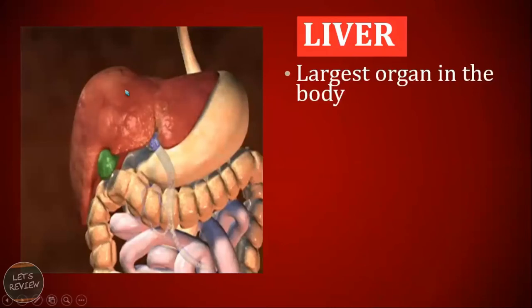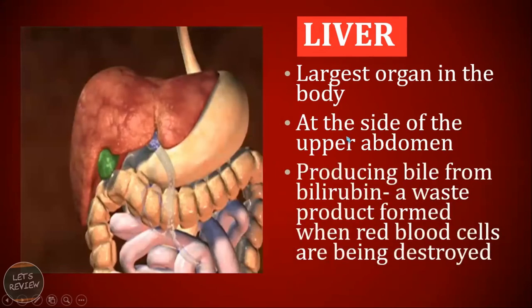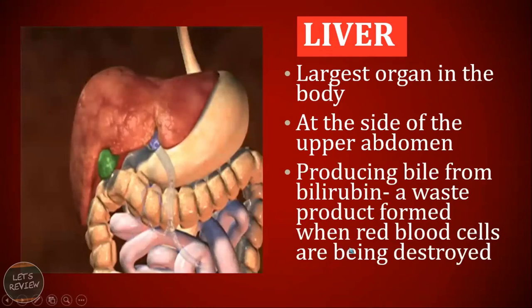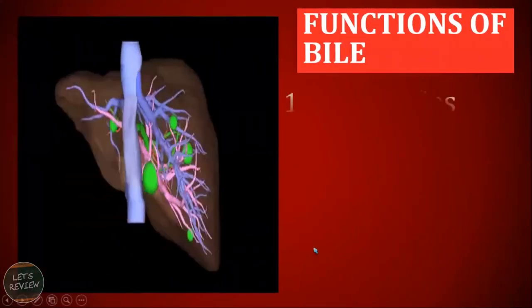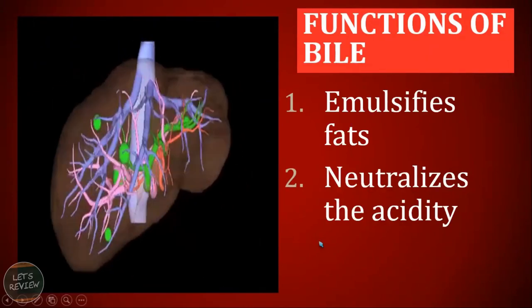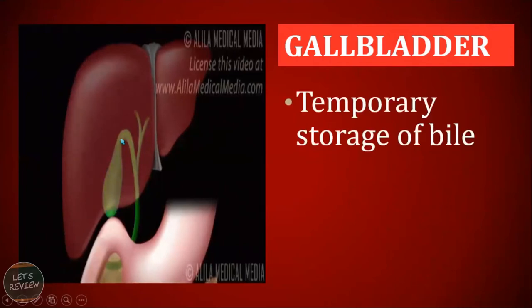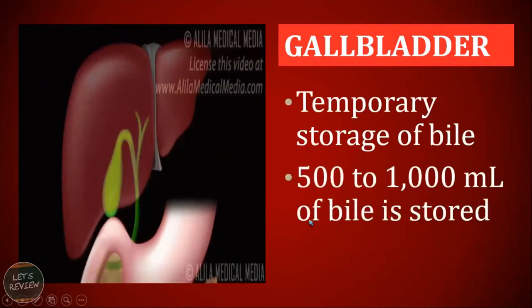The liver is another accessory organ. It is considered to be the largest organ in the body and can be found at the upper abdomen. It produces bile from bilirubin, a waste product from when blood cells are destroyed — so it recycles that into bile. The function of the bile produced by the liver is to emulsify fat and neutralize the acidity of the stomach. Connected to it is a small pouch called the gallbladder, which is the temporary storage of bile — about 500 to 1,000 ml of bile can be stored there.